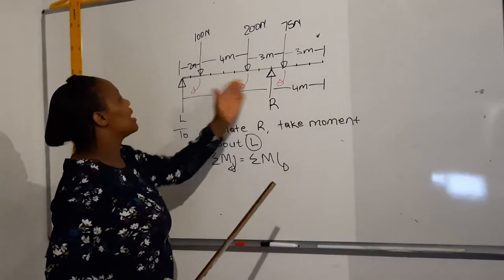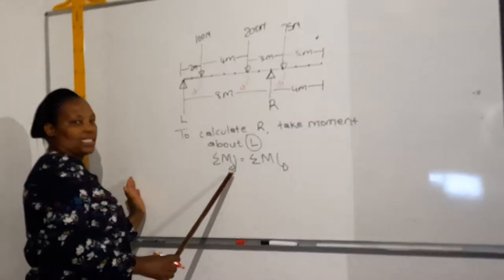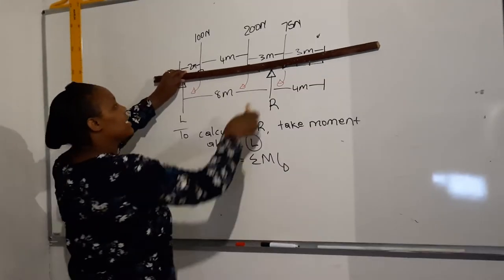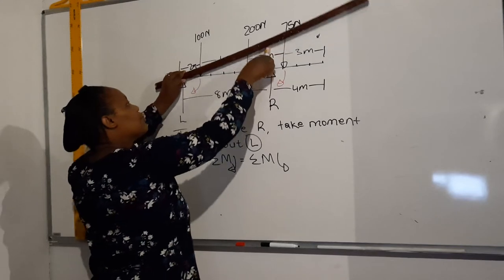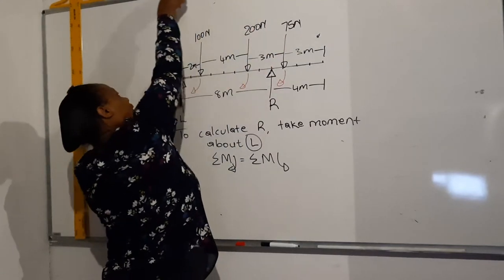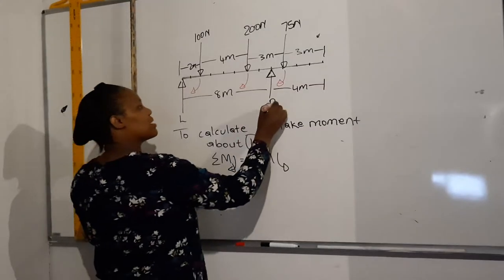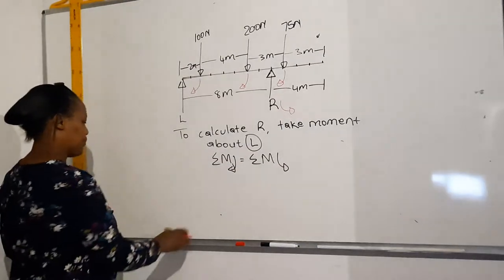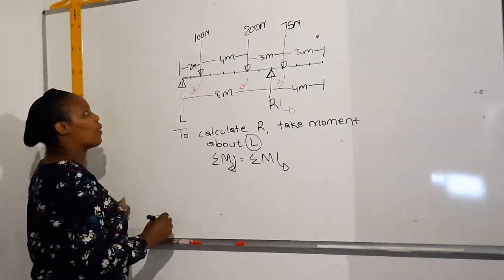So you make a note of that. So those three moments will be together on one side because they are in the same direction. But force R, the reaction force R, is going to push it down like that. It's going to make it turn anti-clockwise. So R will be alone on the anti-clockwise side. Now on your equation you start off with clockwise.